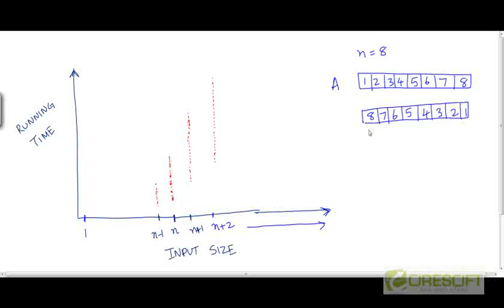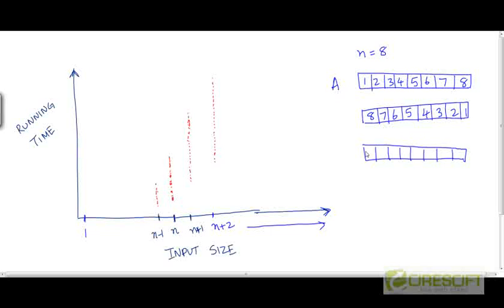Another input of size 8 could be the reverse sorted array: 8, 7, 6, 5, 4, 3, 2, 1. The input size here is also 8. Another possible input of the same size could be a random permutation like 7, 8, 4, 5, 1, 3, 2, 6.